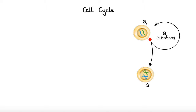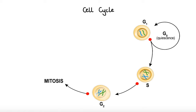After this, the cell moves to a G2 or second gap phase, in which it continues to grow and prepares itself to divide. The final phase of the cycle, known as the M or mitosis phase, is the point at which cell division occurs.